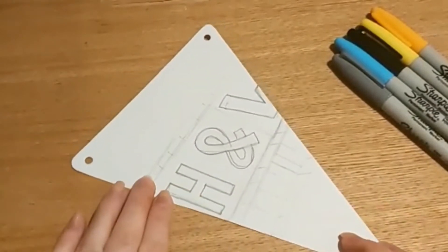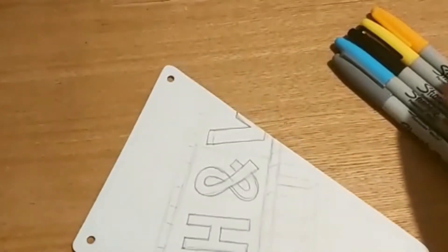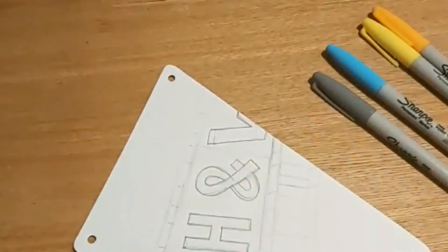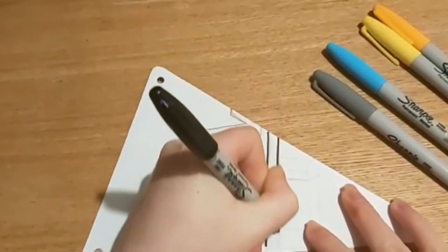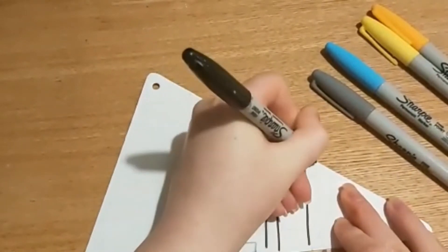So I drew it out in pencil first just in case I made any mistakes and then I'm just going to colour it in real quick. So I'm just going to go over it in black just to make sure it really stands out and then I'm going to colour it in.